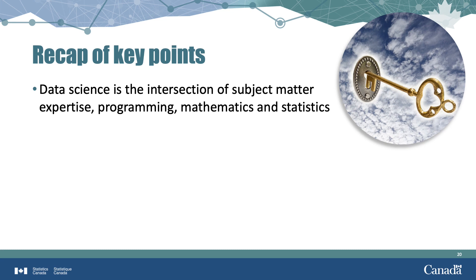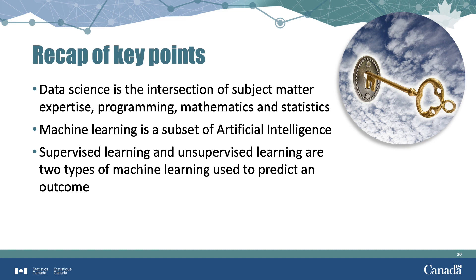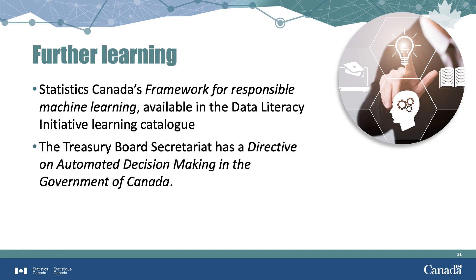In this video, you learned that data science is the intersection of subject matter expertise, computer programming, and mathematics and statistics. Machine learning is a subset of artificial intelligence that focuses on teaching computers how to learn without the need to be programmed for specific tasks. Supervised and unsupervised are two types of machine learning used to predict an outcome. We also presented a framework for how to build and use machine learning algorithms responsibly. You can find Statistics Canada's framework for responsible machine learning in the Data Literacy Initiative Learning Catalog. If you want to learn more about the use of artificial intelligence and machine learning in the Government of Canada, enter 'Treasury Board Secretariat Directive on Automated Decision Making' in the search field of your favorite browser.